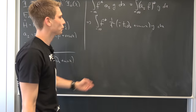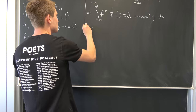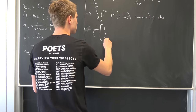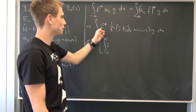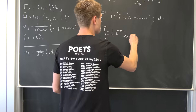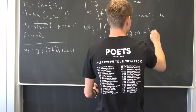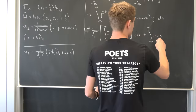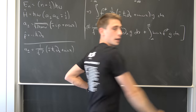So this is equivalent to: 1 over the square root, times an integral from minus infinity to infinity of ∓ħ — which is just a constant we can bring in front — times f conjugate ∂ₓg dx, plus this next term: the integral from minus infinity to infinity of mωx f conjugate g dx.